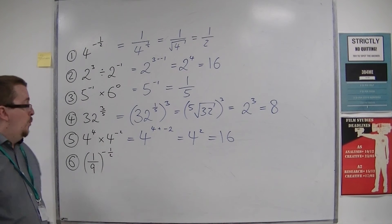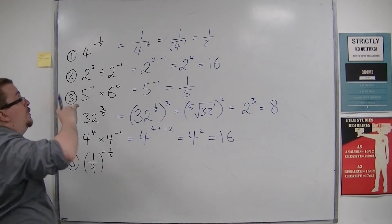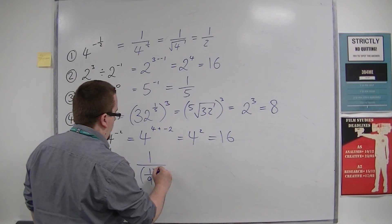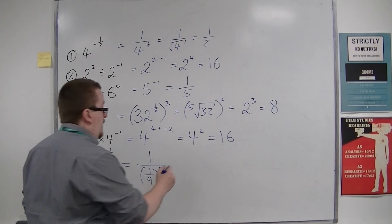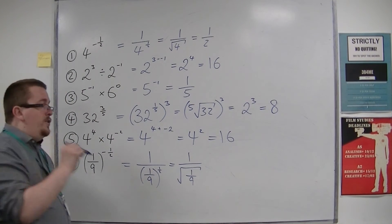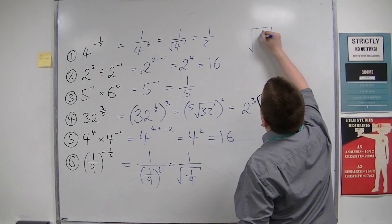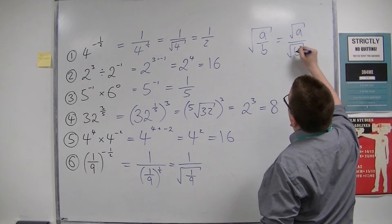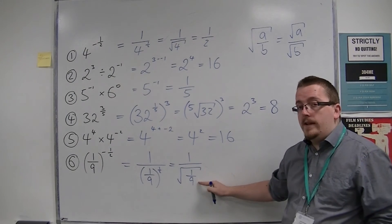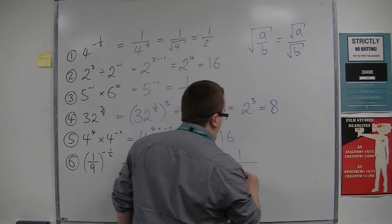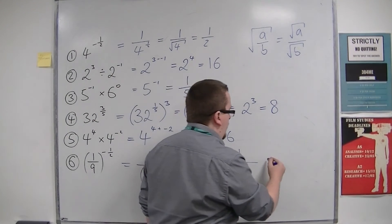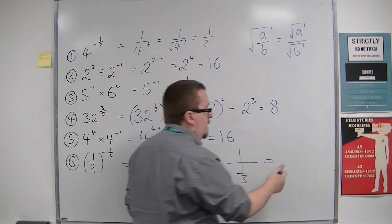Then finally we've got number 6: 1 ninth to the power of minus 1 half. So as before, I'm going to deal with the negative sign first. So this means 1 over 1 ninth to the power of 1 half. So 1 ninth to the power of 1 half, so that's the square root of 1 ninth. So when you're square rooting a fraction, the square root of a over b is the same as the square root of a over the square root of b. You can square root the numerator and the denominator individually. So the square root of 1 is 1, the square root of 9 is 3. So this is 1 over 1 third. Now, if you're dividing by a fraction, it's the same as multiplying by the reciprocal. So 1 over 1 third is 1 times 3 over 1, which is just 3.